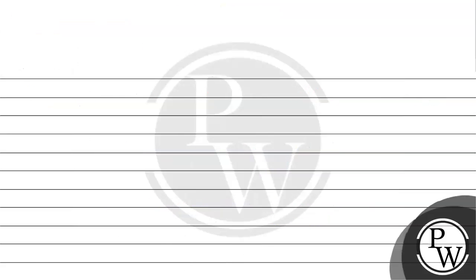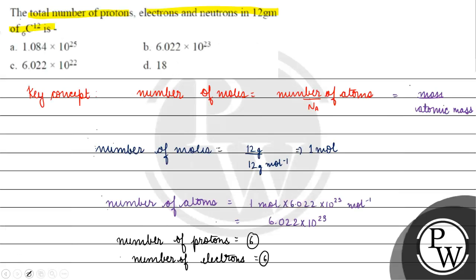If we talk about the number of neutrons, what will happen? Number of neutrons will be equal to mass number, which is 12, minus atomic number, which is 6. The answer will be 6.